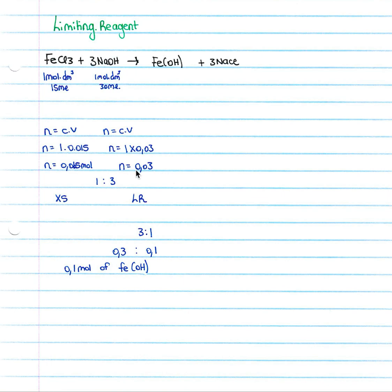Therefore our NaOH is going to limit our reaction. Our FeCl3 will not be able to fully react because there is not enough NaOH to allow that reaction to take place. Therefore NaOH is our limiting reagent and our FeCl3 is an excess reagent.